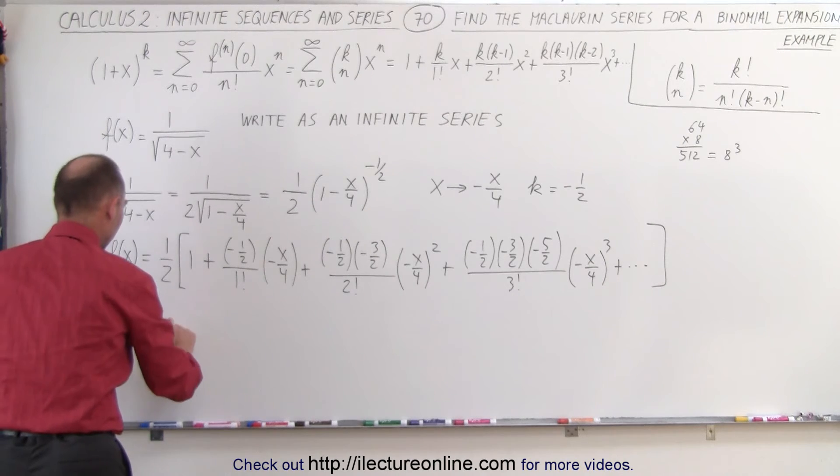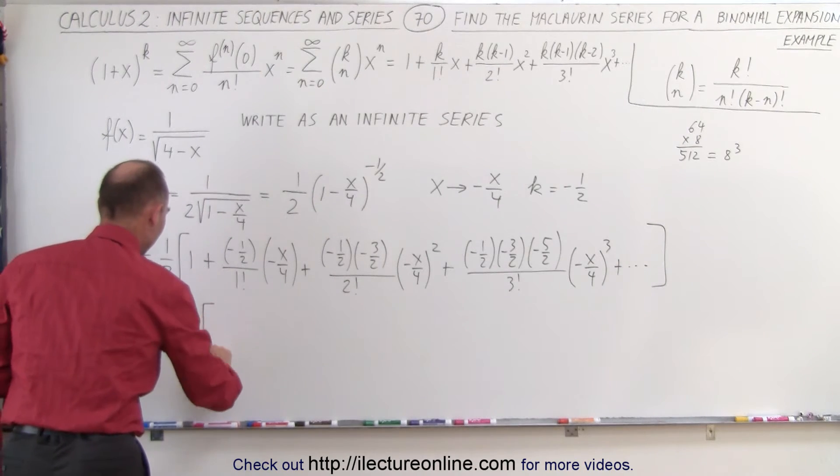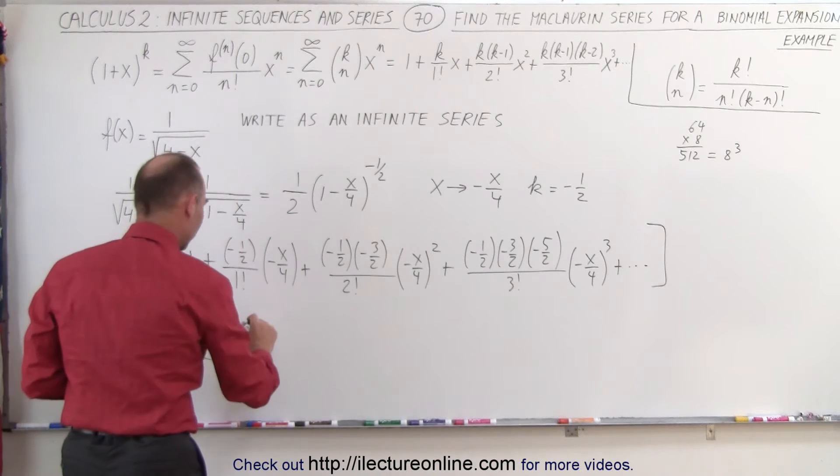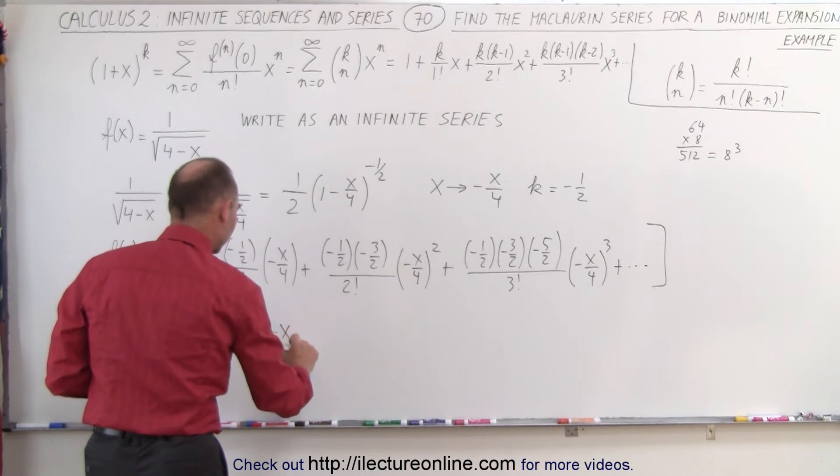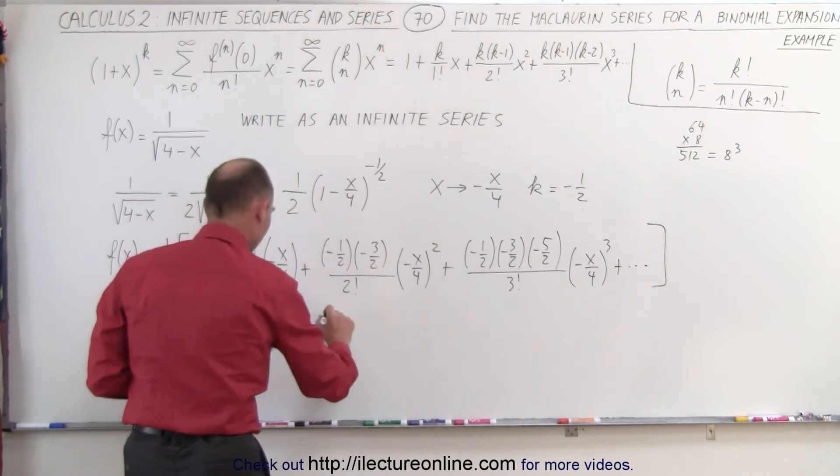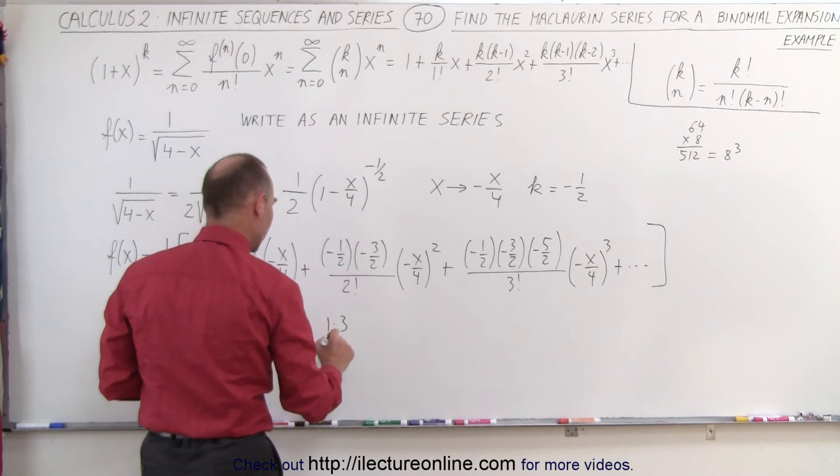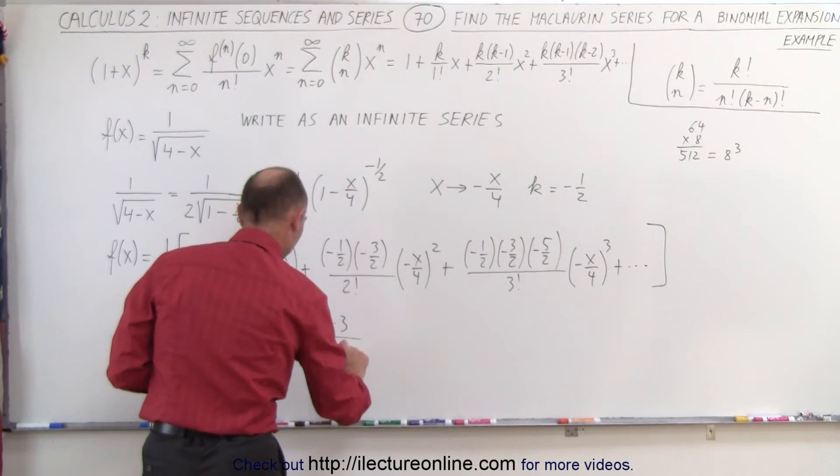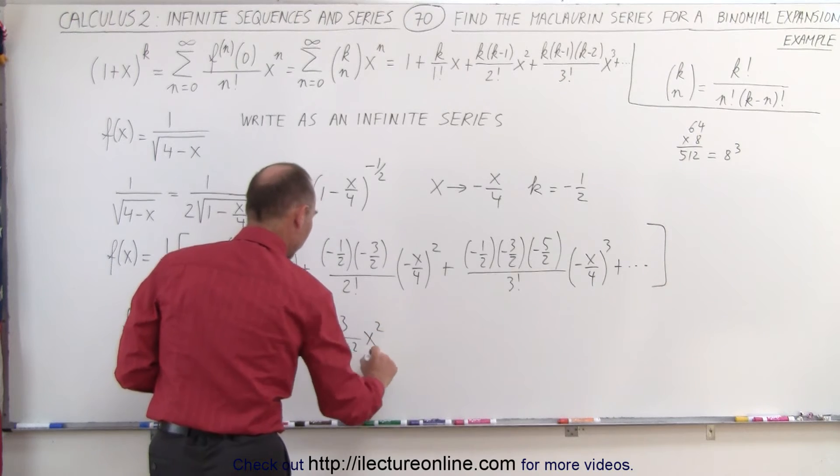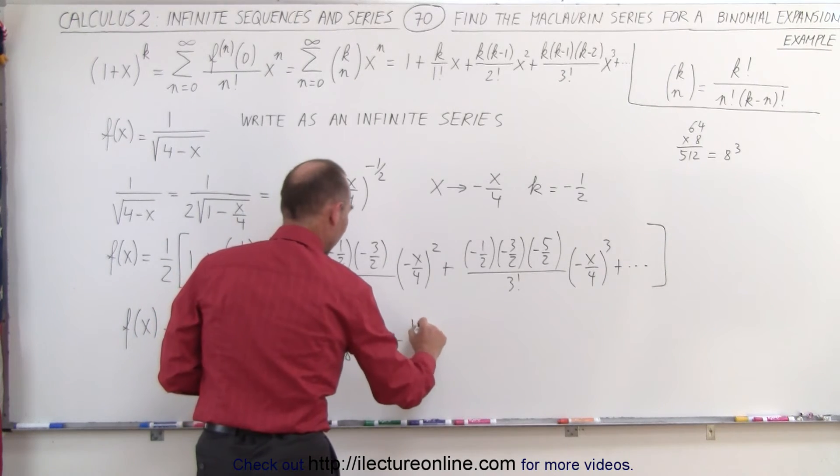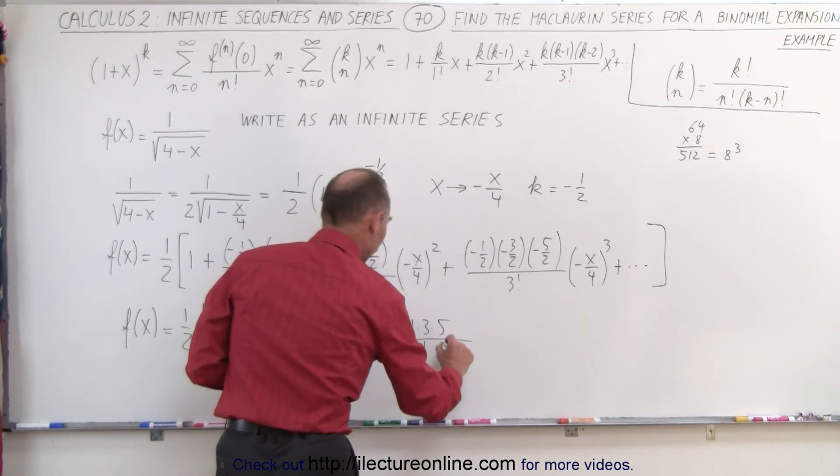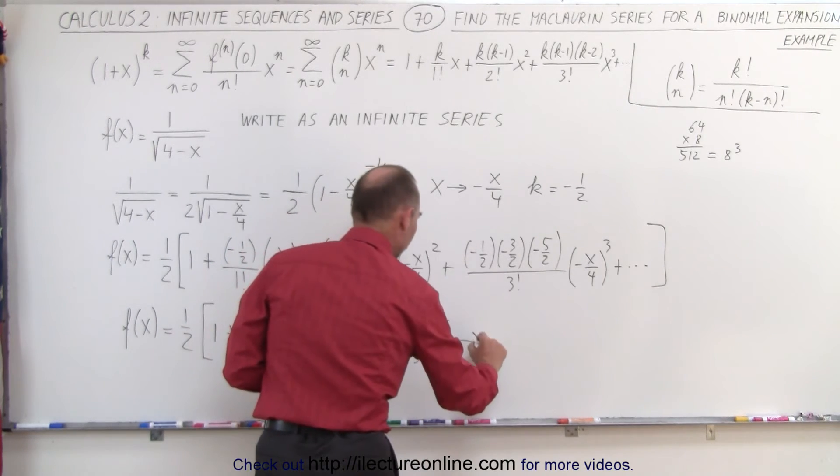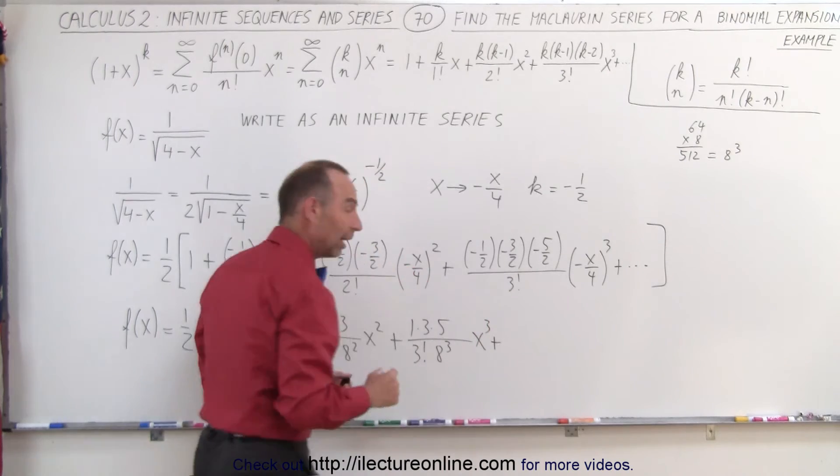We have f of x is equal to 1 half times 1 plus. In the numerator we're going to have a 1 divided by 1 factorial times 8 times x plus 1 times 3 divided by 2 factorial 8 squared times x squared plus 1 times 3 times 5 divided by 3 factorial 8 cubed times x cubed. Of course you can now see the pattern.